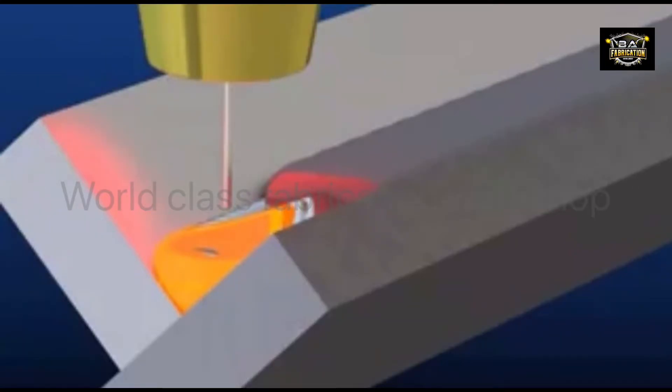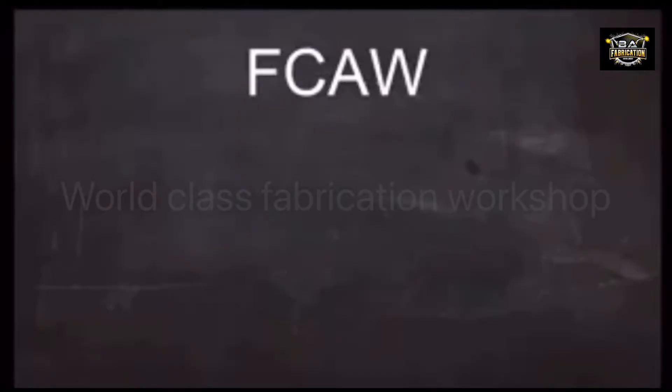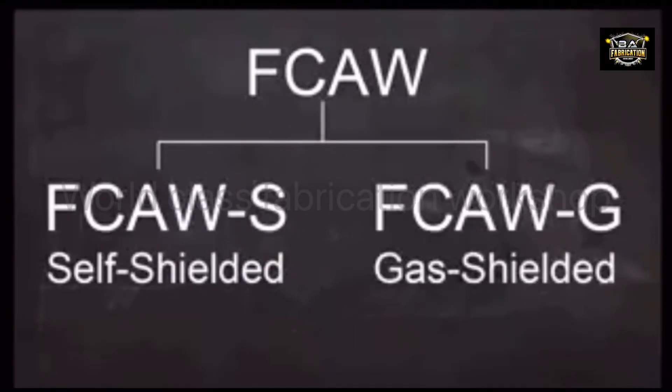Flux-core welding always adds filler metal to the joint. The job of the flux inside the electrode depends on which type of flux-core process it was designed for. You see, there are two main types of flux-core arc welding: self-shielded, known as FCAWS, and gas-shielded, known as FCAWG.